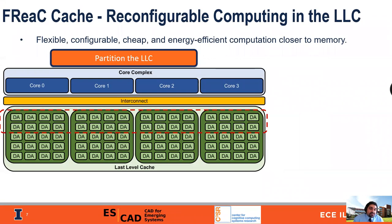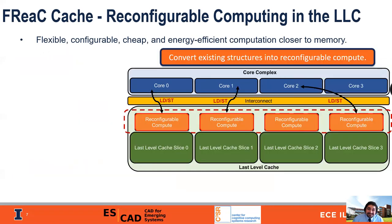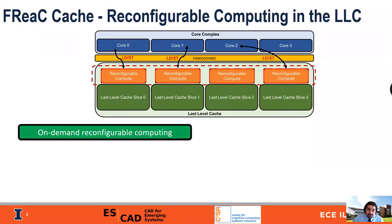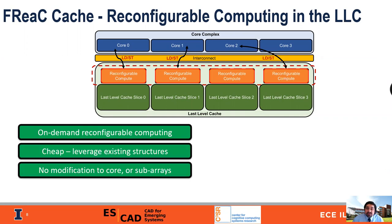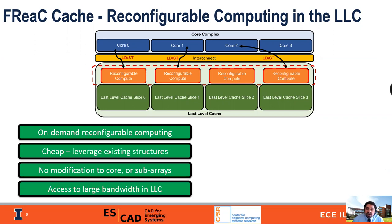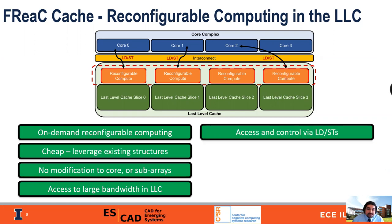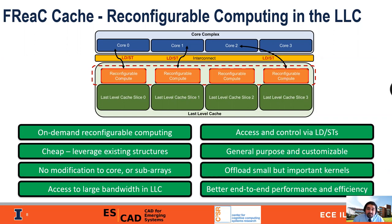We do this by partitioning the last-level cache and reusing the existing sub-arrays and data arrays, converting them into reconfigurable compute. In doing so, we provide on-demand reconfigurable computing. It's cheap because we leverage existing structures and we don't modify the cores or the sub-arrays themselves. Crucially, you have access to the large bandwidth of the last-level cache, and you can access these units through simple loads and stores operations. We have general purpose customizable computation that we can use to offload small but important kernels, providing better end-to-end performance and energy efficiency.